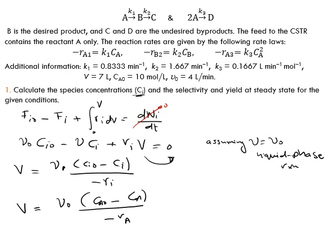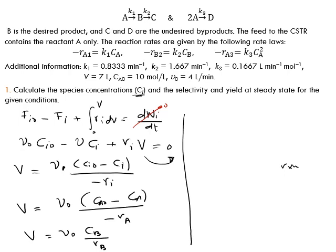Let's apply it for A, B, C, and so on. For A, we have V equals upsilon 0 (CA0 minus CA) divided by minus RA. We can write for B as well: V equals upsilon 0 CB divided by RB since we don't have B in the feed. Let's write it for D: V equals upsilon 0 CD divided by RD. We can write it for C: CC over RC. Then we write the rate laws.